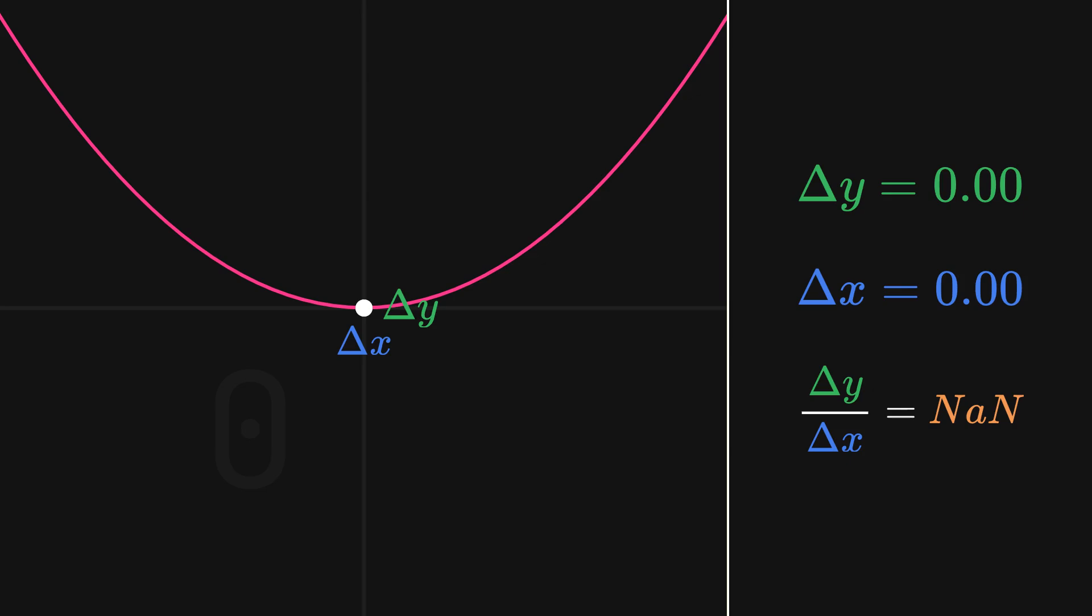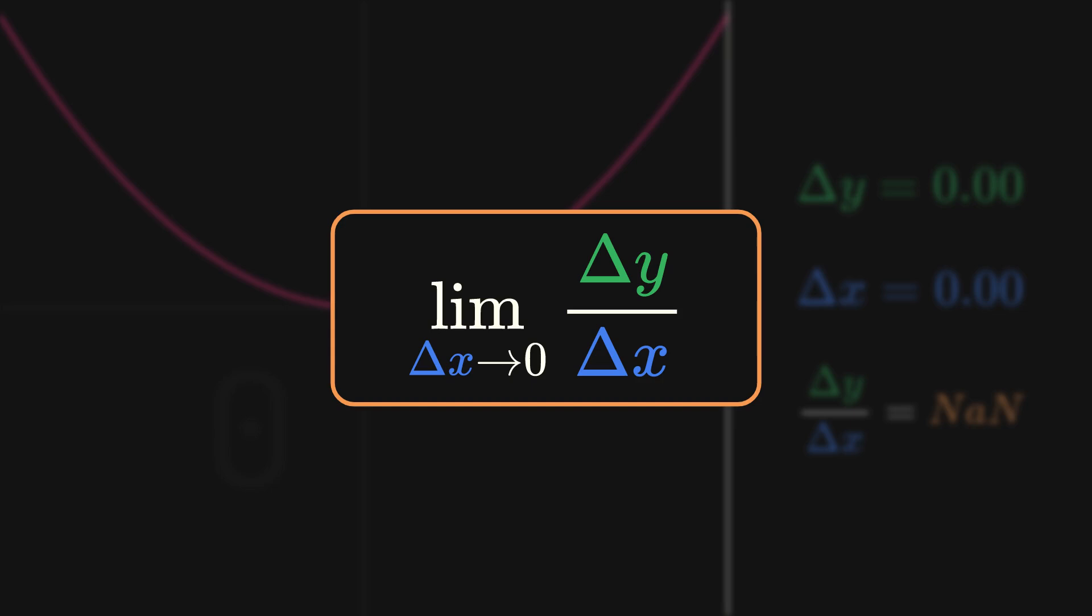If we want to get a more accurate slope without dividing by zero, we can use the limit on the rate of change formula, which means that we are now making the difference in x as close to zero as possible without making it zero.